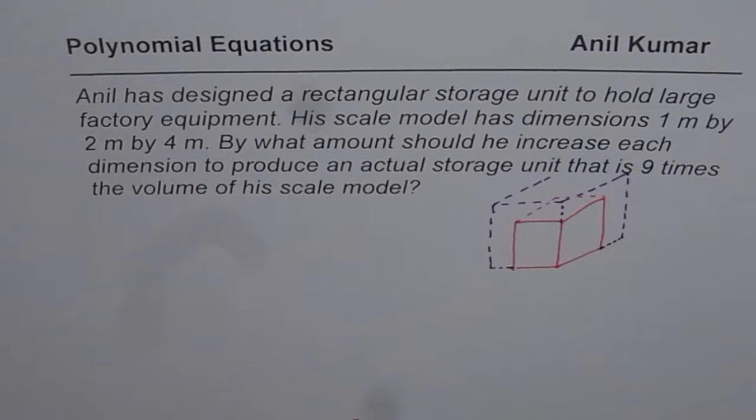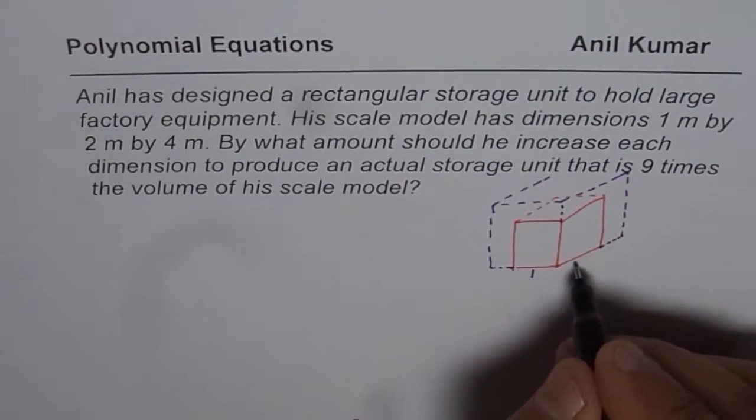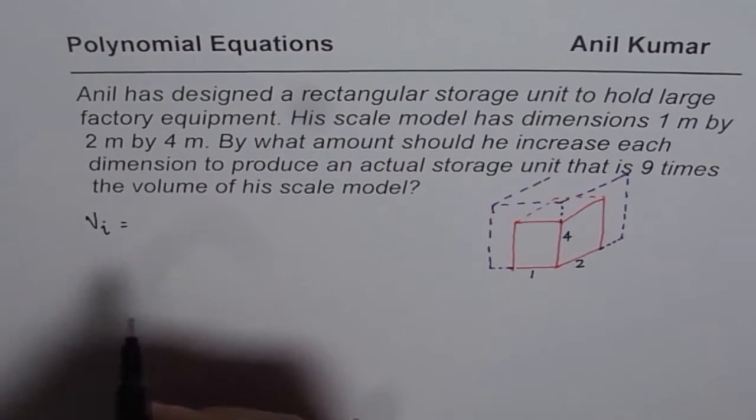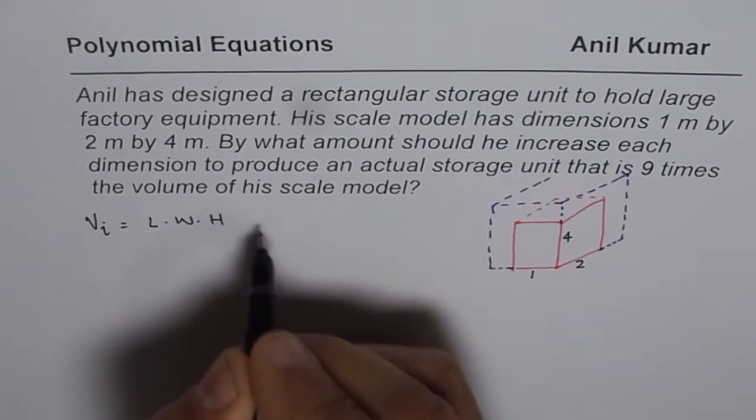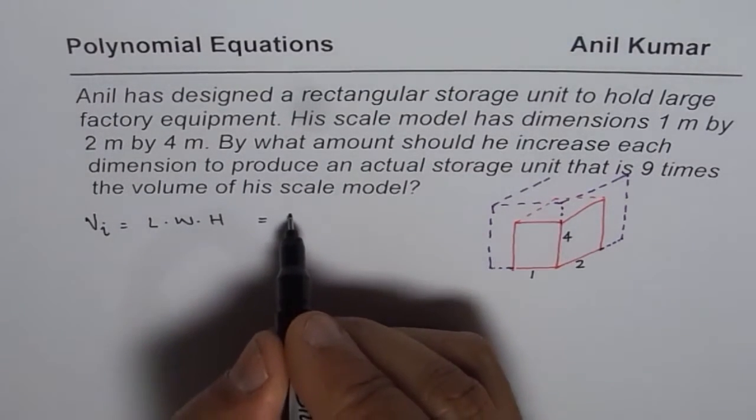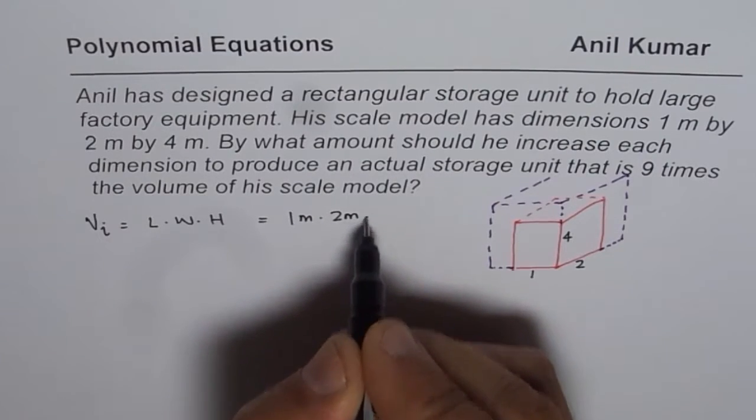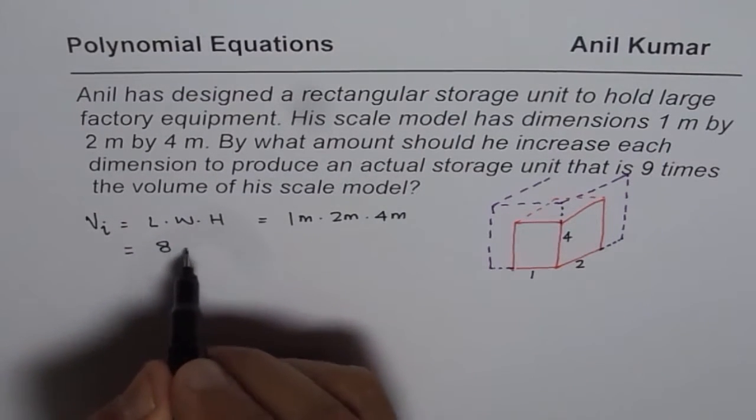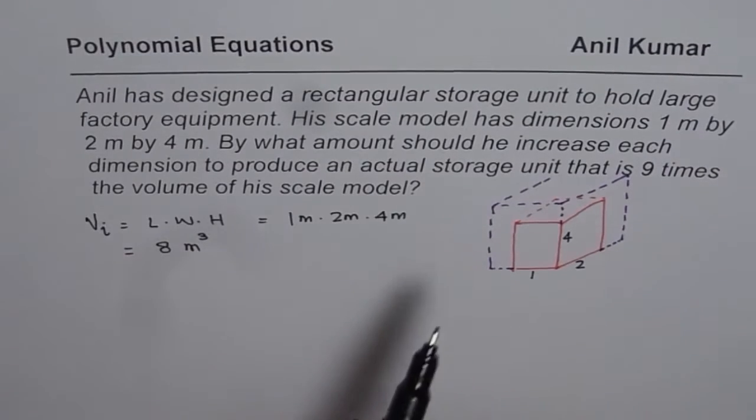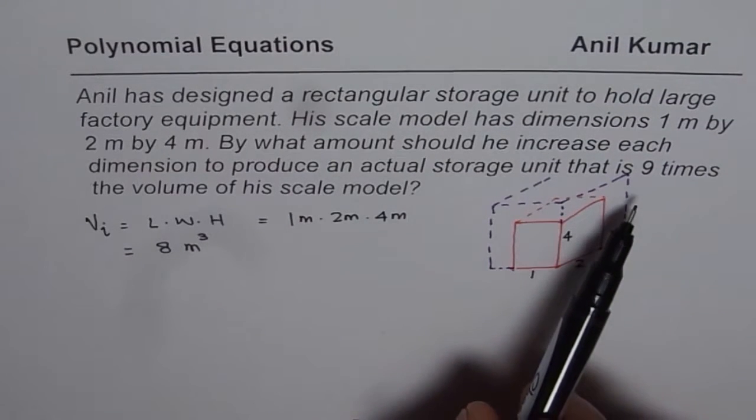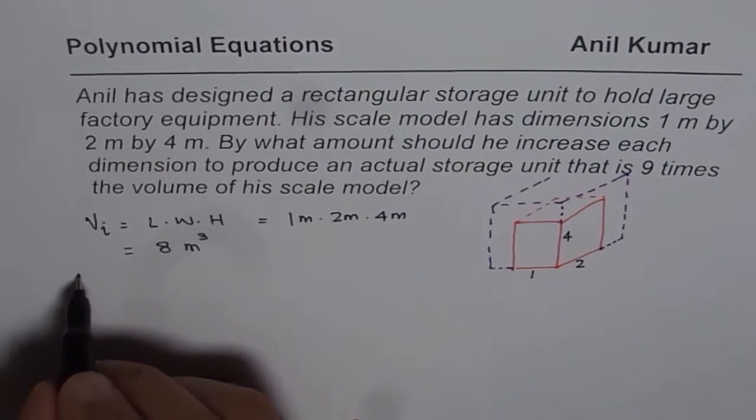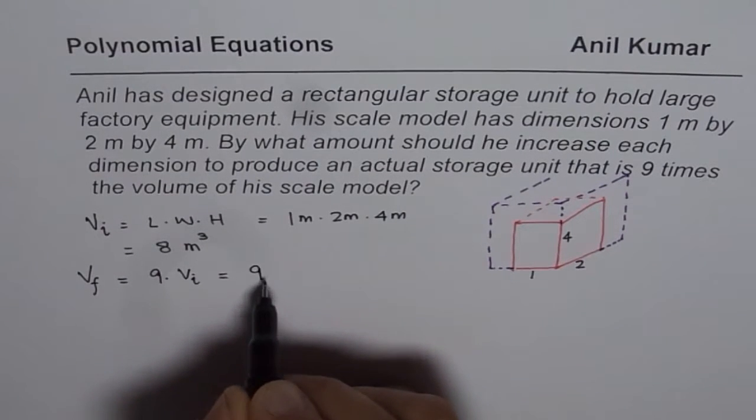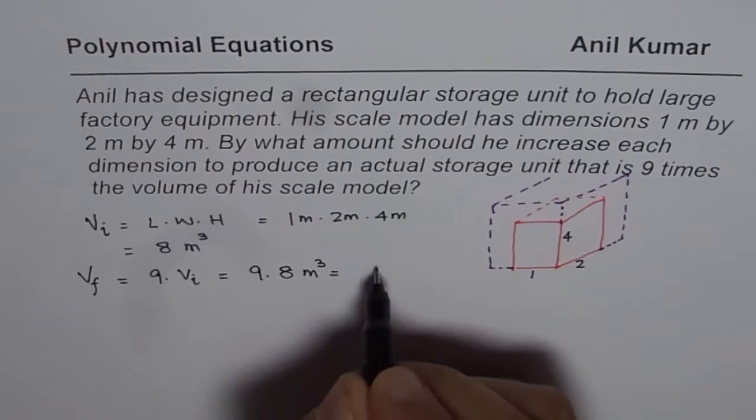Now we are given that the initial dimensions are 1, 2 and 4. So initial volume will be length times width times height. And in our case, it is 1 meter by 2 meters by 4 meters. So we get initial volume of 8 meter cube. Now we need to scale the model so that the volume increases 9 times. So we want final volume to be 9 times initial volume, which means 9 times 8 meter cube and that is 72.